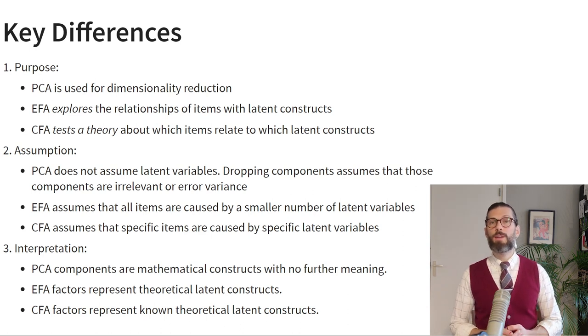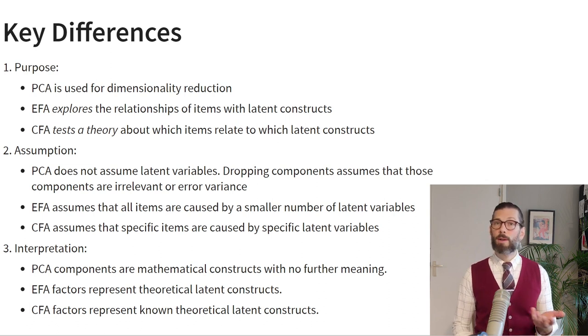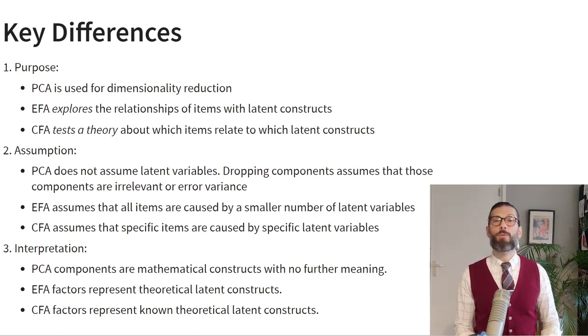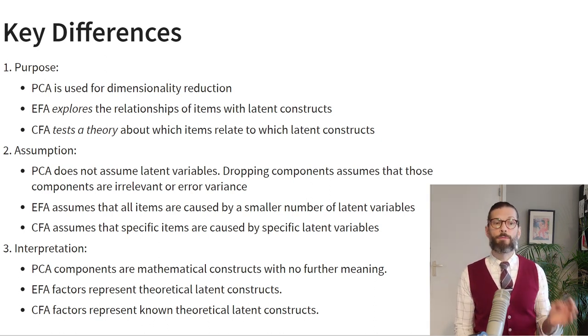When we look at the interpretation of these three techniques, the components resulting from principal component analysis are just mathematical constructs with no further meaning — they're just the same data rotated in space. Exploratory factor analysis results in factors that represent theoretical latent constructs, and confirmatory factor analysis represents known theoretical latent constructs. So we might obtain a factor from exploratory factor analysis and guess that it represents extraversion because a lot of extraversion items load highly on it. But in confirmatory factor analysis we know which factor represents extraversion because we allow only the extraversion items to load onto it.